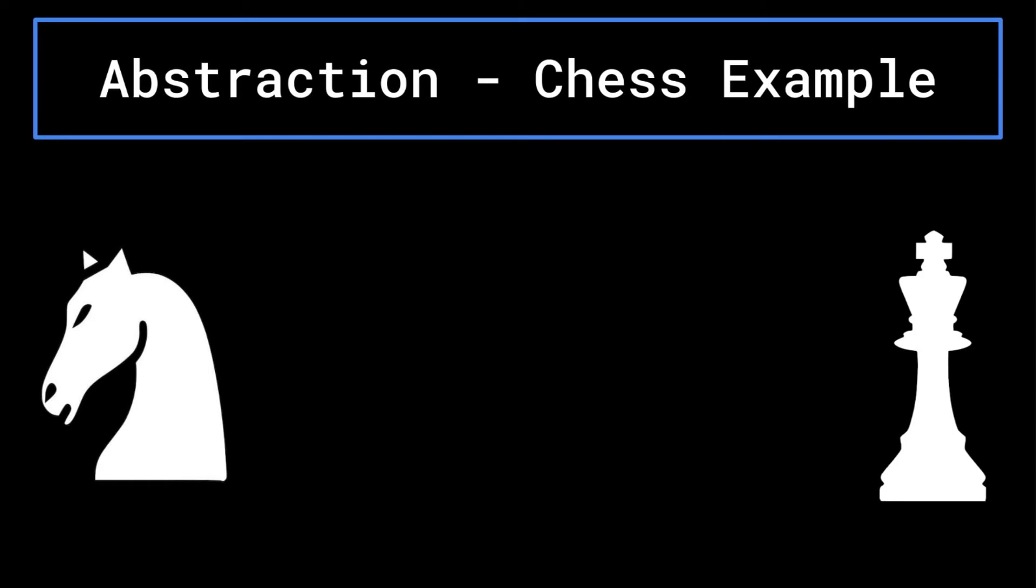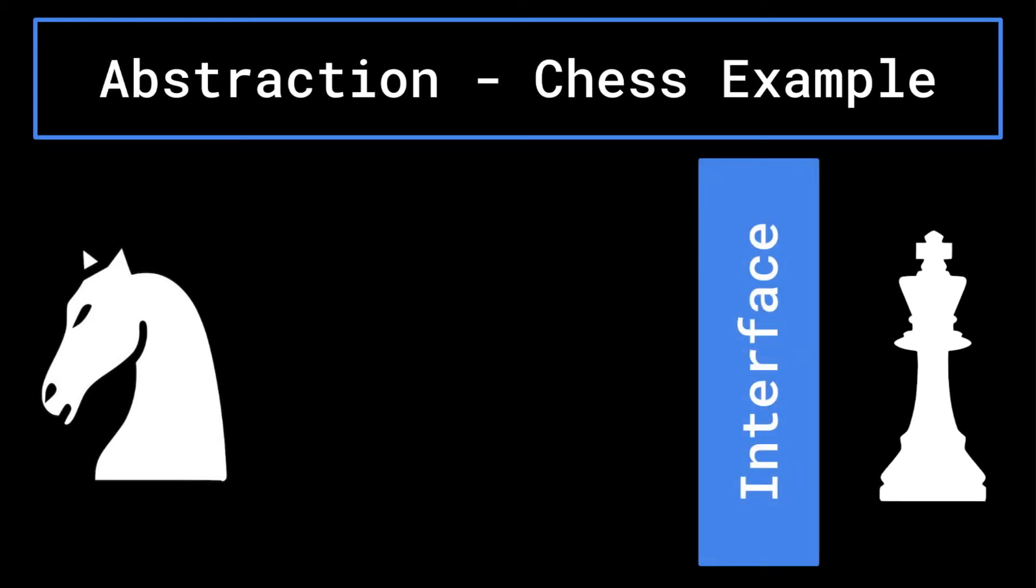Let's return to the chess example that we've been using throughout the series. Let's say that you are working on the knight class, and a fellow programmer is working on the king class. In order to effectively work together, you need to agree on an interface with which these pieces are able to communicate together. In this case, say that you are working on making the knight unable to move if your king is in check.